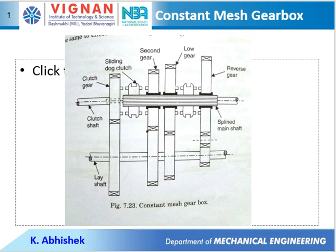Now we have to talk about the constant mesh gearbox. As you know, this is the second type of gearbox, the first one being sliding mesh gearbox in which the gears are sliding. You have to remember there are three shafts: clutch shaft, layshaft also called as counter shaft, and the third one is the splined main shaft. In this system, all the gears and all the shafts are always engaged. Though the gears are engaged all the time, the main shaft does not rotate — it can remain stationary because of the clearance between the gear and the main shaft. The gears on the layshaft are fixed, so the layshaft keeps on rotating all the time.